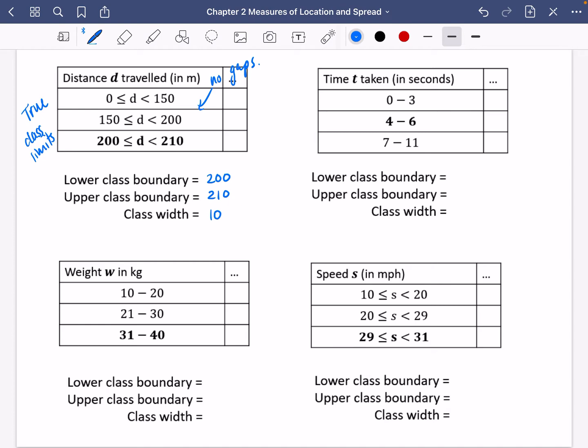So for this second one that we've got here, I think there's probably some rounding that has happened here. So it's actually going to be between 3.5 and 6.5, rounded half down from the 4 and half up from the 6. So the lower class boundary is 3.5. The upper is 6.5, which means the class width is the difference between those, which is actually 3.